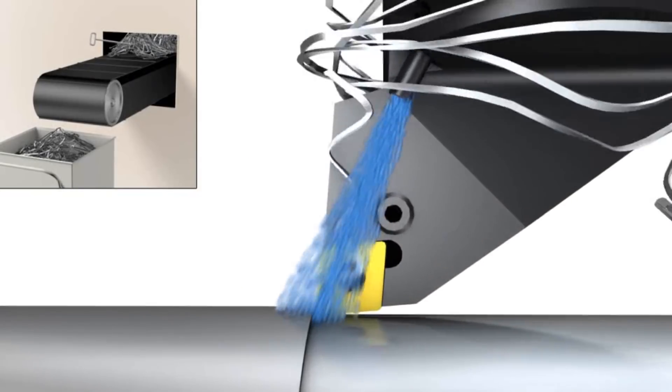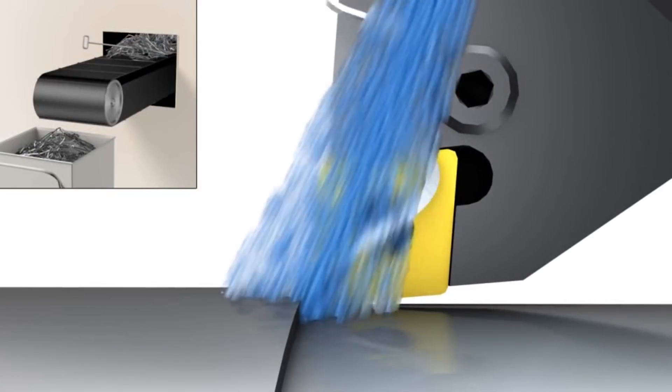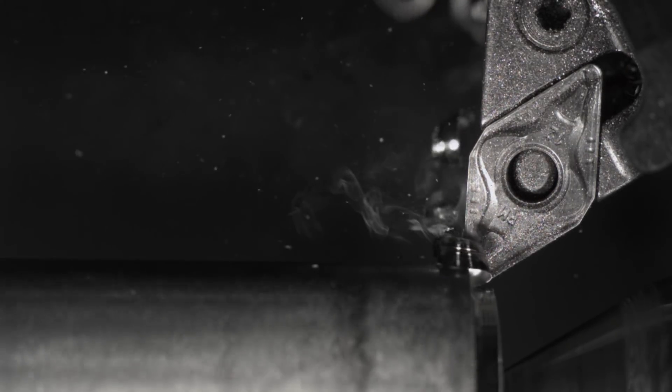Stopping the machine to manually untangle the jam greatly slows down production. Thus, using a smaller nose radius than usual can be a successful, though less conventional, method.